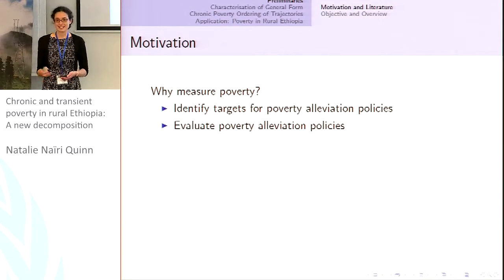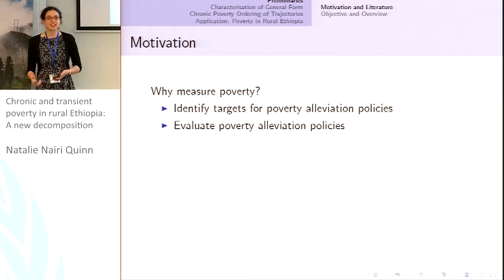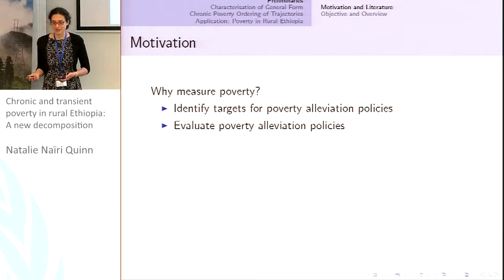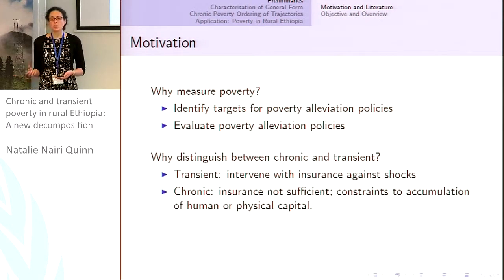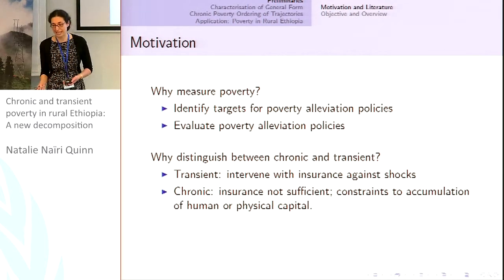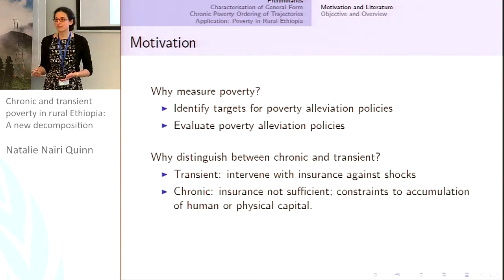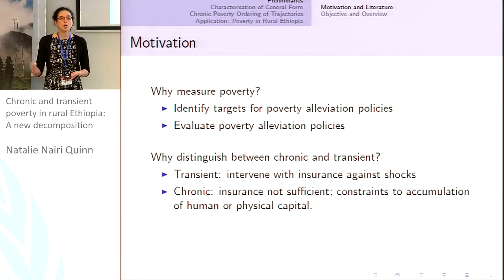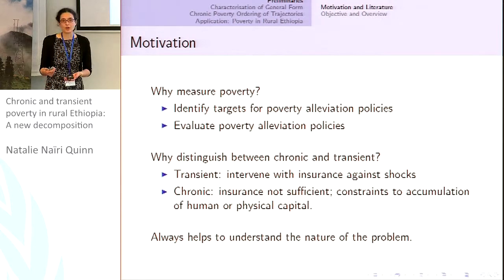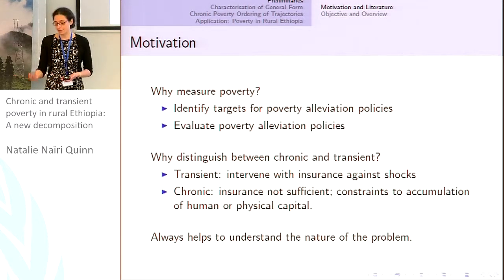Just to quickly motivate — hopefully if you're sitting in this room you're already interested in measuring poverty and thinking about chronic poverty. Why do we want to measure poverty? Perhaps looking at targets for policies and also evaluating how policies are working or not. What about the time dimension? What about the interest in chronic poverty as opposed to transient poverty? There may be different sources and causes of households remaining in poverty persistently over time or being vulnerable to shocks, so there's good reason to distinguish between transient and chronic. It's never bad to use data and information to understand what's going on.